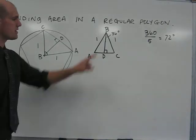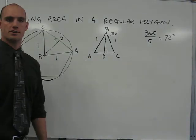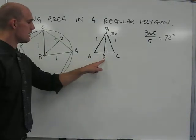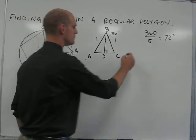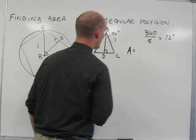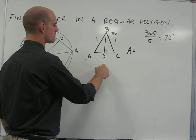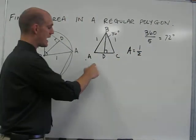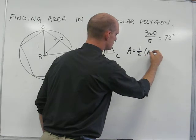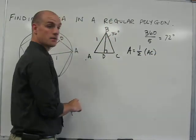Now that we know that this angle is 36 degrees, we can use trig ratios to solve for the measures of the unknowns that we need. The area of this triangle is equal to one-half of the base, AC, times the height, BD.